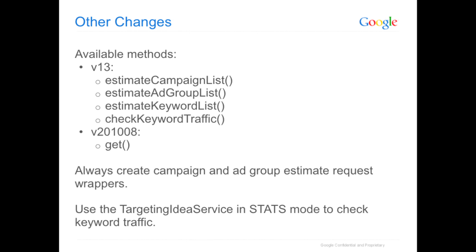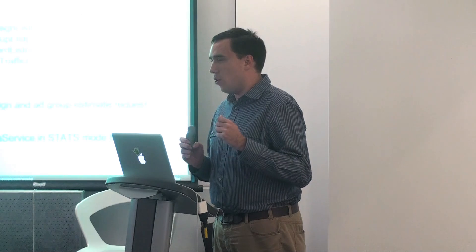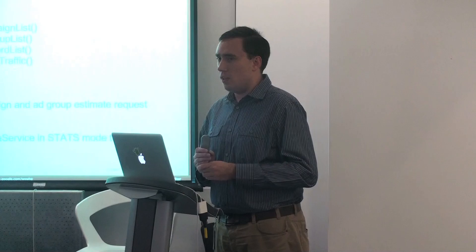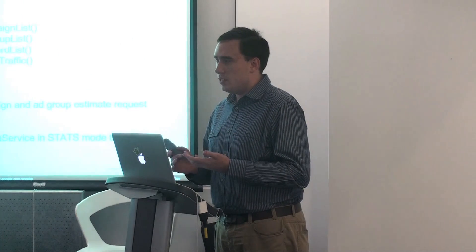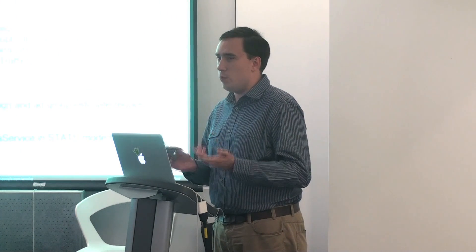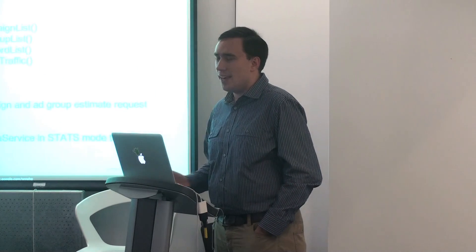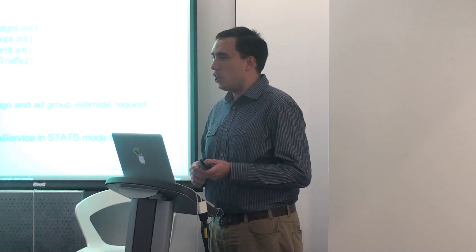In v2108, those top three methods have been combined into just one get method. What this means is you'll always have to create a campaign and ad group layer — you can't skip right to the keywords — but overall it's a benefit because providing campaign and ad group information gives you better traffic estimates. The fourth method, 'check keyword traffic,' was a simple method that for a given keyword returned true or false on whether it gets enough traffic to serve at all. It's been deprecated in the traffic estimator service because the same basic information can be retrieved from the targeting idea service.